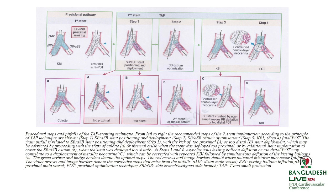Now, steps of TAP stenting. TAP stenting — go to the provisional pathway, put the first stent in the main vessel, recross it, do a kissing balloon, and create the anatomy. You can see the main vessel stent starts covering, to some extent, the side branch ostium. Then put a stent in the side branch, deploy it, bring the balloon up, and post-dilate the ostium. You can see a little bit of the edge of the side branch stent is inside the main stent.